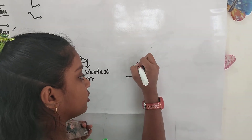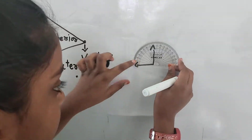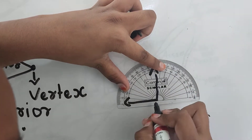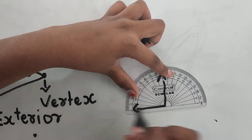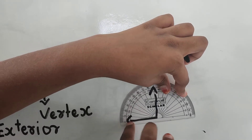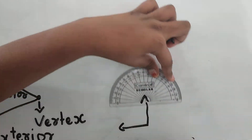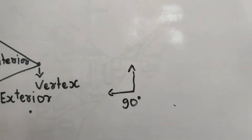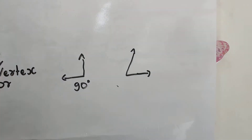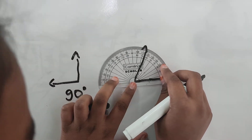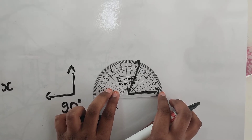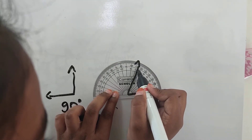Now, this is an angle. I am keeping the protractor on it. This line should be on the baseline, and this vertex should touch this point. This is showing this side — one side is 0 and the other is 180. The outer line is showing 0, so we have to measure at the outer line. It is 90 degrees. Let us measure some more angles. This arrow is showing here — the inner line is showing 0, so we have to measure at the inner line. It is 65 degrees.